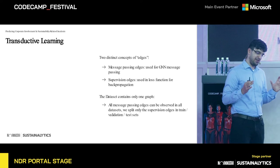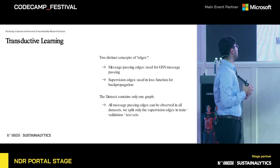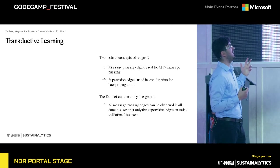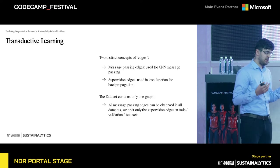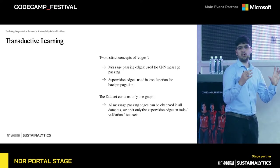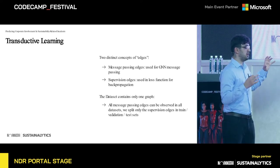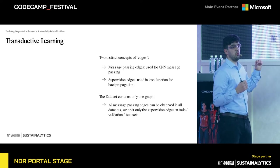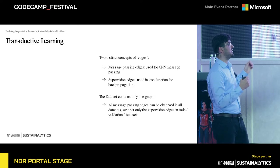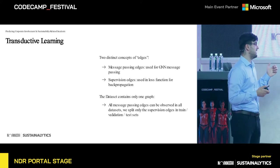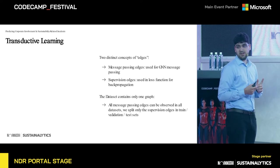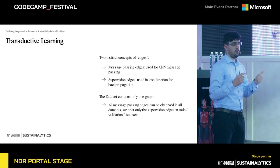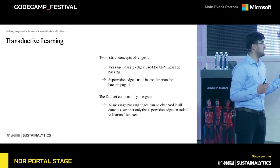For graph link prediction, we need to define the concept of transductive learning for dataset splitting. We also need to define two concepts of edges for link prediction. We have message passing edges, which are used to pass node embeddings between neighbor nodes, and we have supervision edges — in our case, edges labelled with 1 when the edge exists in the graph, and edges labelled with 0 when it does not. In the transductive learning scenario, the dataset contains only one graph, meaning all message passing edges are observed during training, testing, and validation, and we split only the supervision edges.